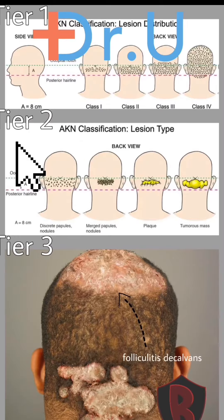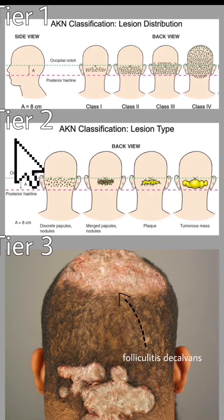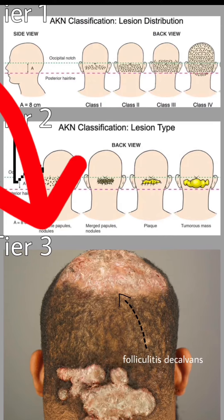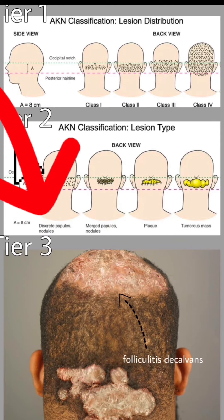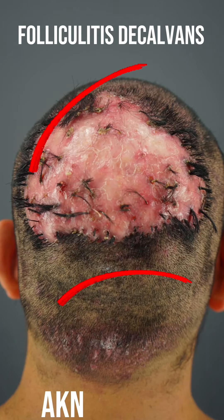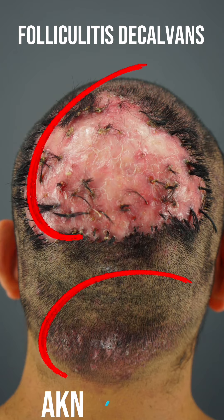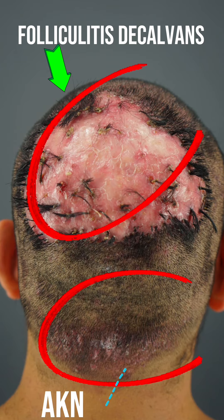This completes the Tier 2 aspect of the classification chart. Now let's complete Tier 3. Tier 3 is defined by the presence or absence of another scalp condition called folliculitis deKalvans, regardless of the AKN lesion type and distribution already described in Tier 1 and Tier 2.